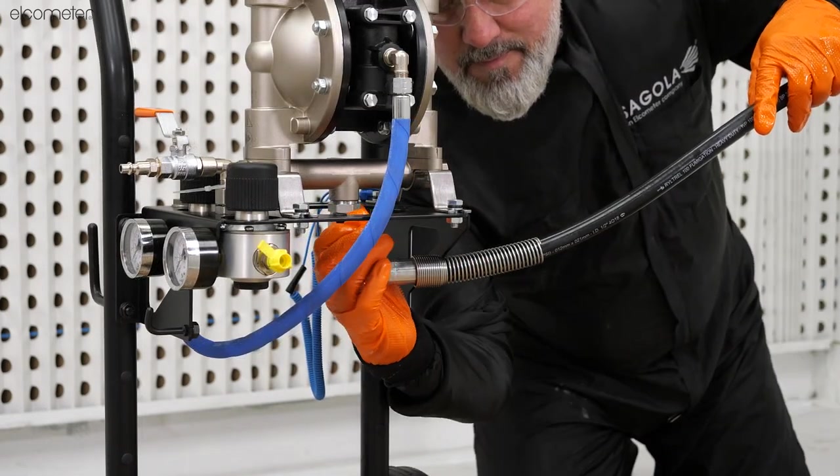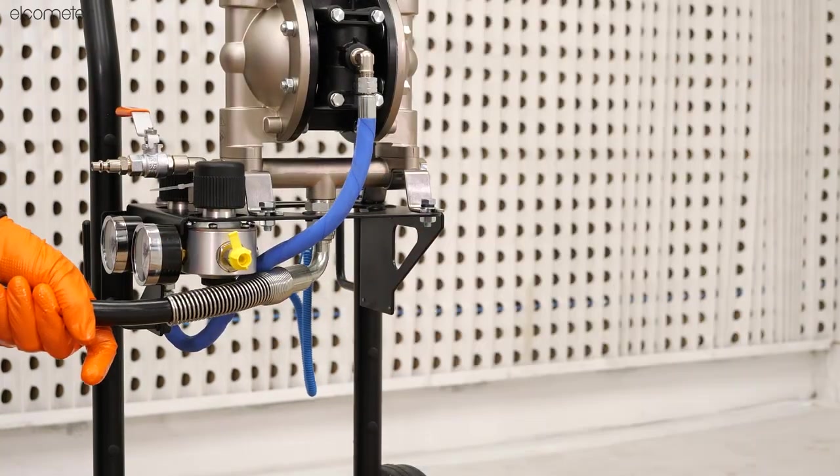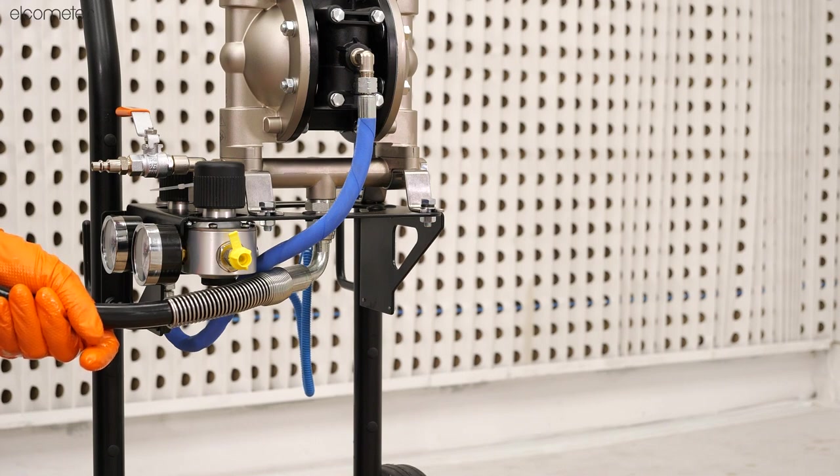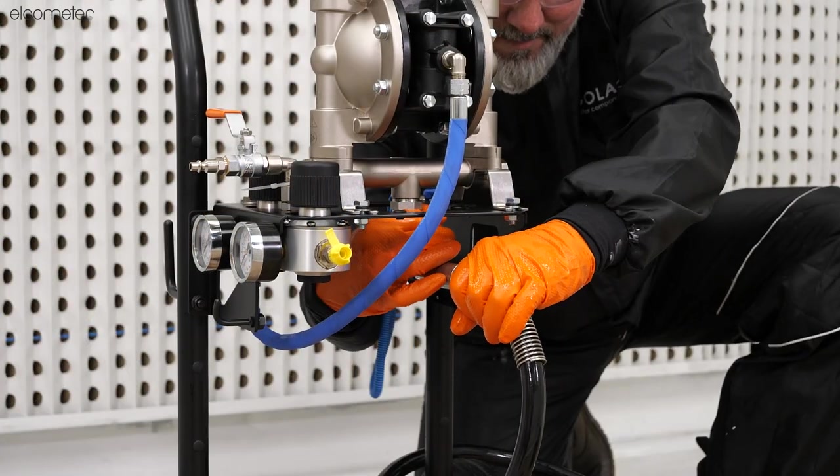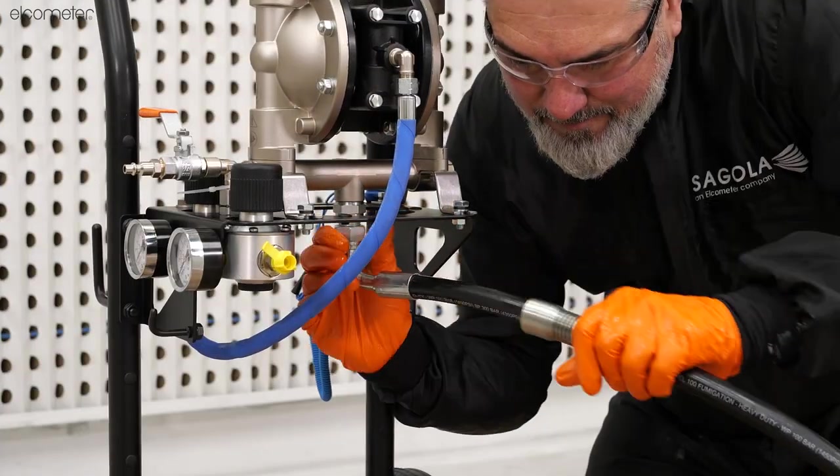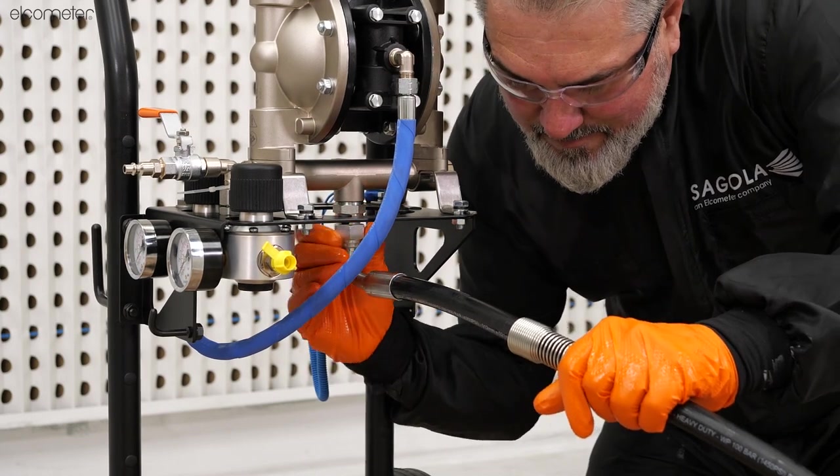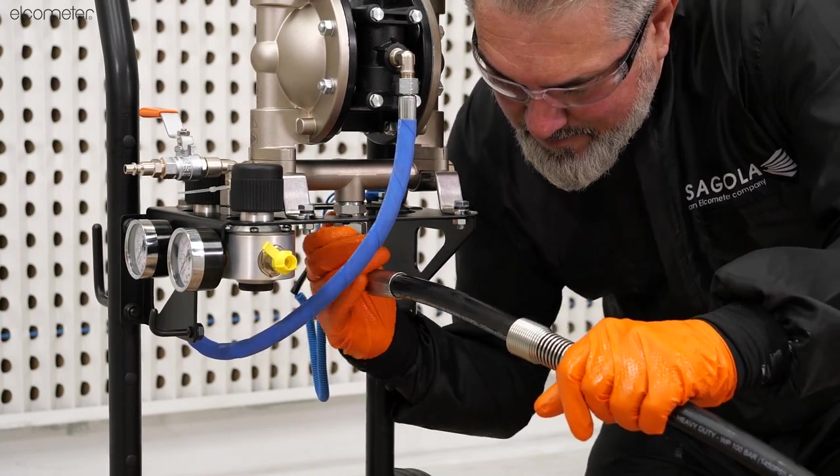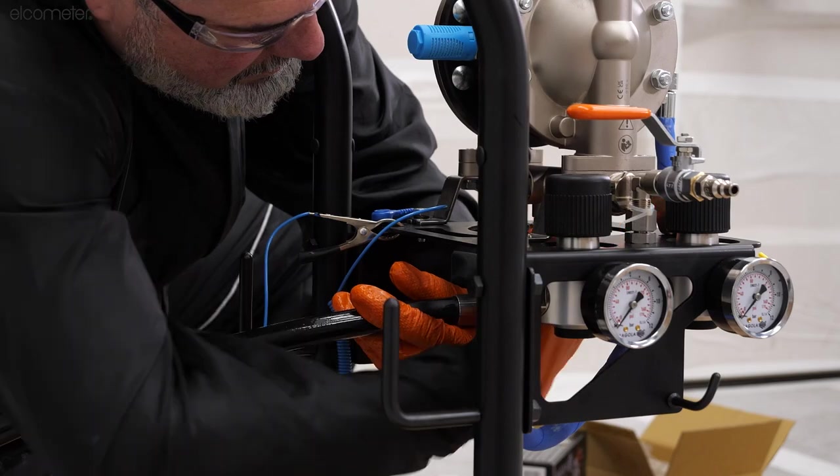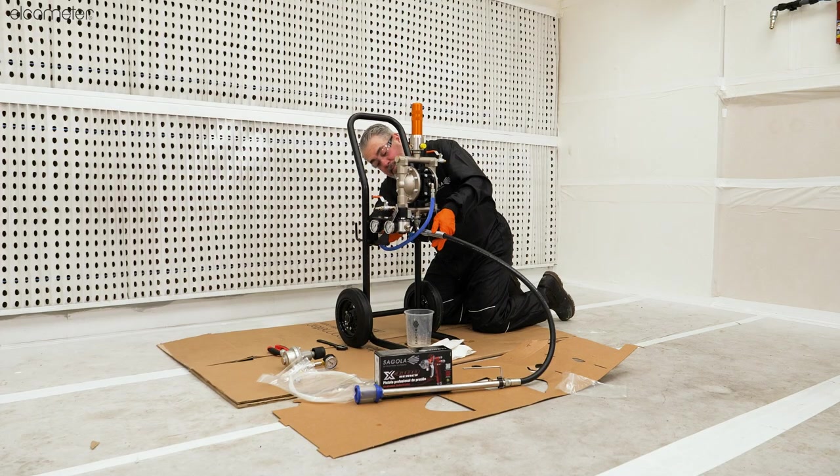Before doing this, determine the position you would like your product intake hose to face. This is typically determined by the position of your product container. For ease of assembling, loosen the anti-kink spring located on the end of the hose, tighten it by hand, and then using the adjustable wrench from behind the pump.